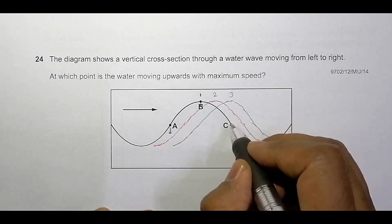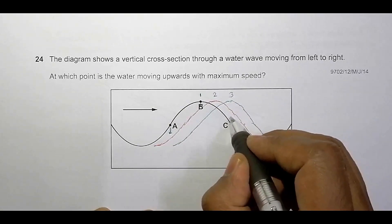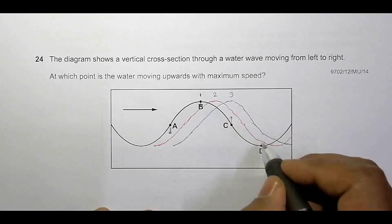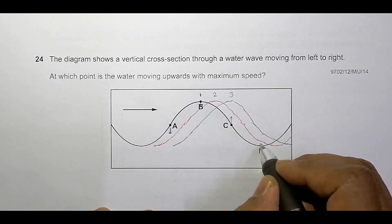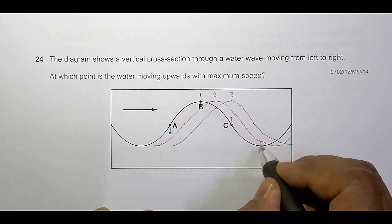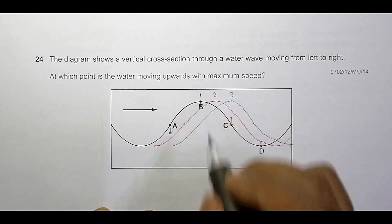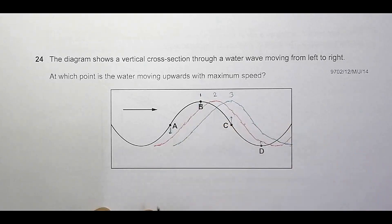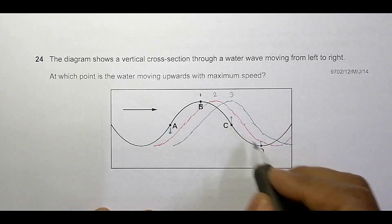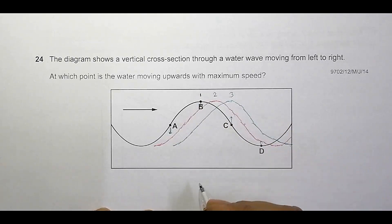Point C is going up, and point D is also going up. After some time, D moves upward. So choice C and D both qualify for being upward-moving points.